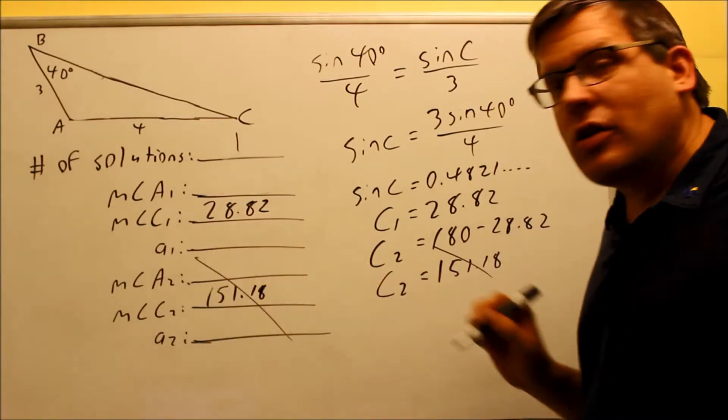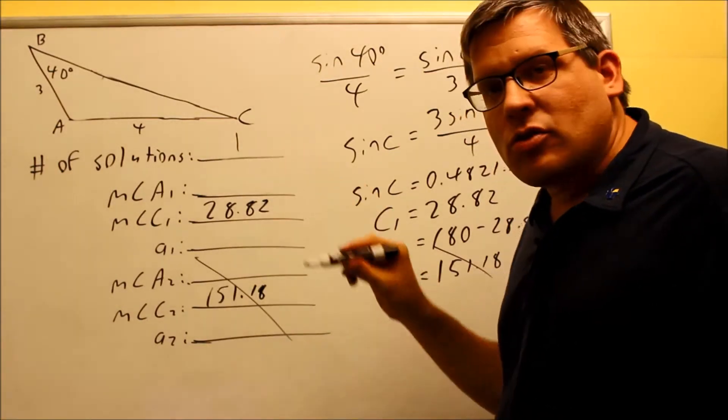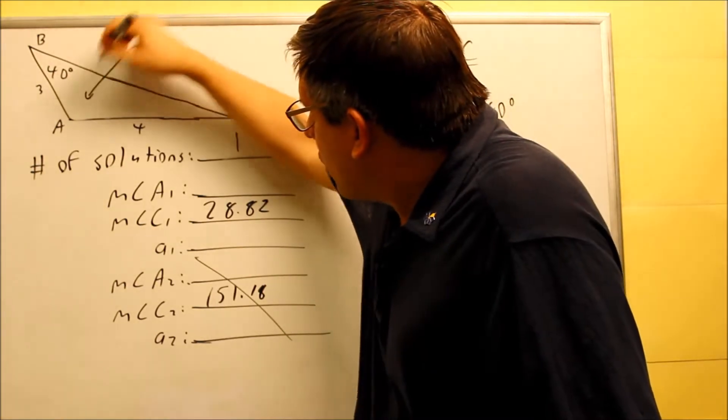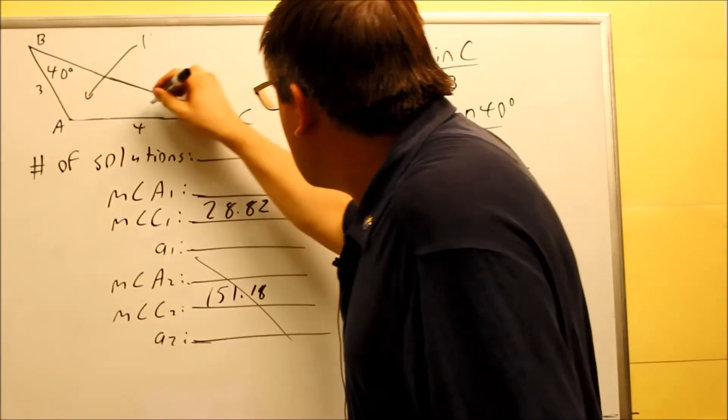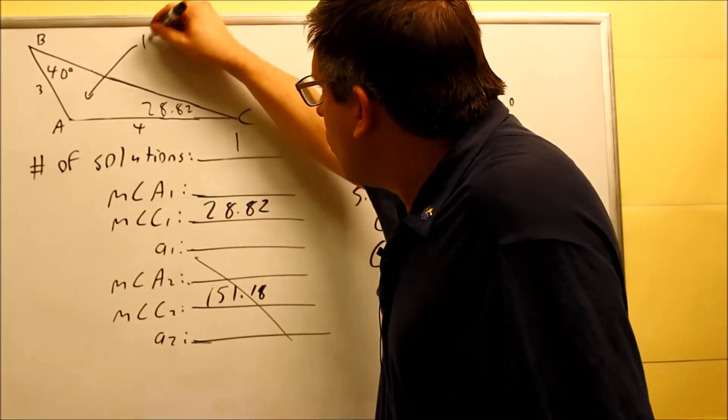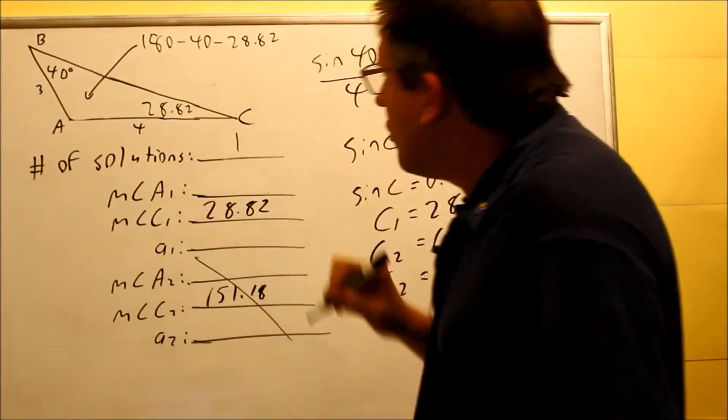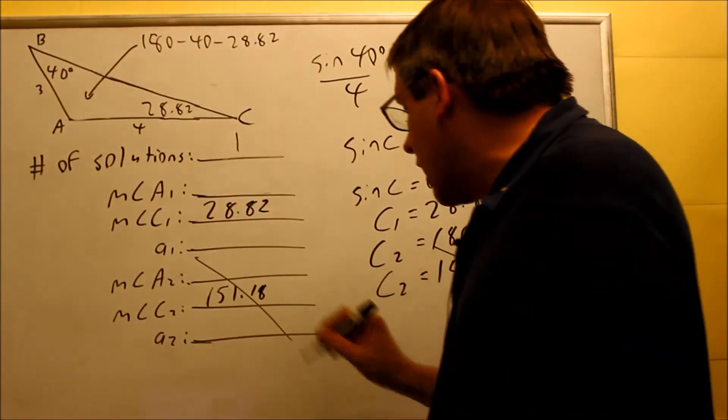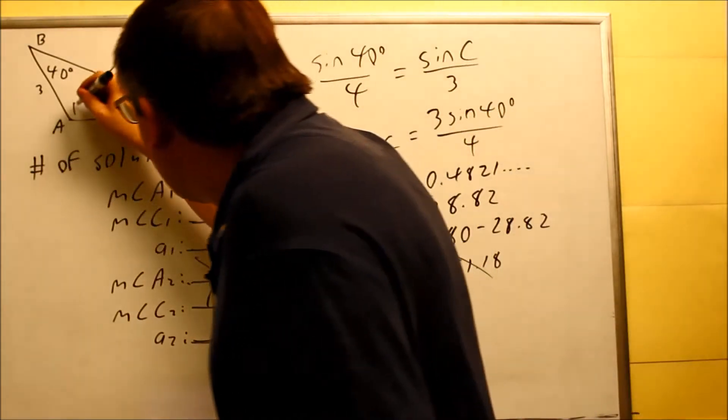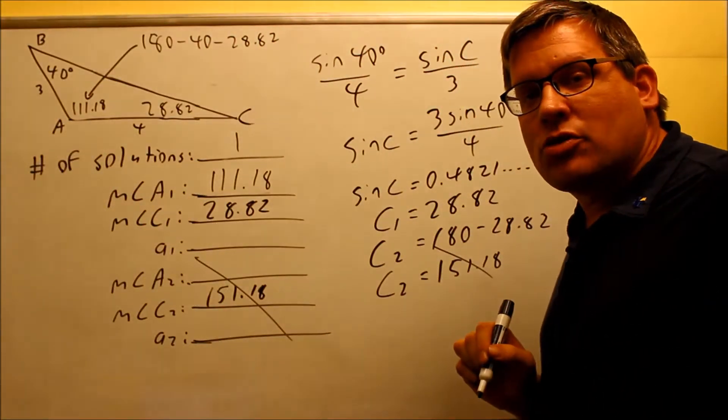So therefore, I don't need any of these other blanks because I only get one solution. But I still have to find out my other answers here. So I still want to find the measure in angle A. So here, I'm going to go ahead and subtract. I know this is, I'll go ahead and label this as 28.82. This one is going to be 180 minus 40 minus 28.82. So if you subtract all that, what you're going to get is 111.18. And I'll put that here, 111.18. So now I have all the angles in my triangle complete.